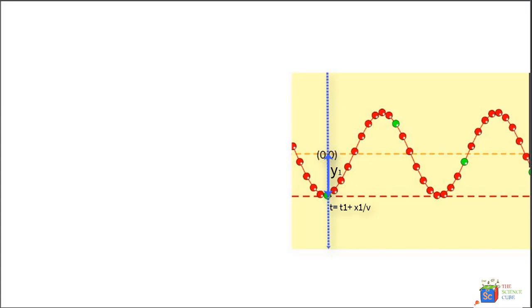The same displacement, that is y₁, will happen at the origin at time t equal to t₁ plus x₁ upon v, because the time taken for this disturbance to reach the origin is this only. And once it reaches the origin, it will obviously have the same y₁ displacement. Hence if we substitute t₁ plus x₁ upon v for time, what we get is y(x₁,t₁) is equal to A cos 2πf times x₁ upon v (where v is the velocity of the wave) plus t₁.